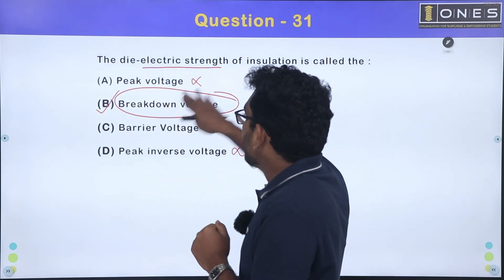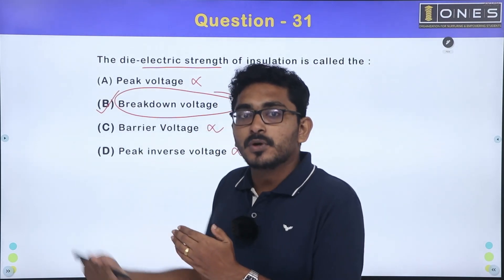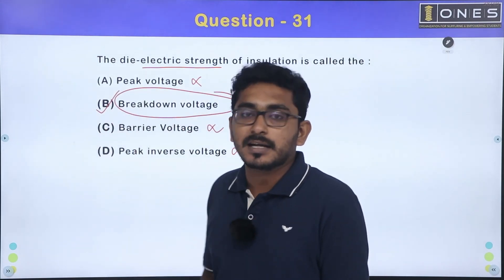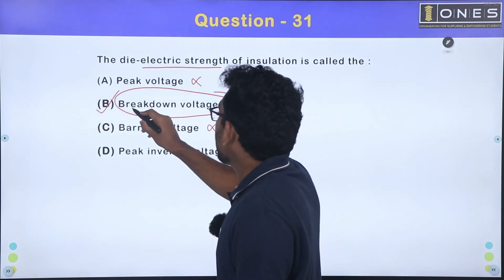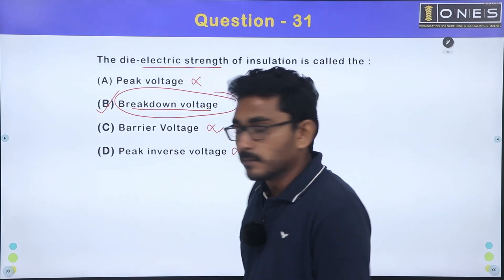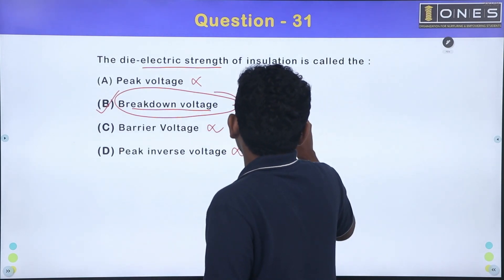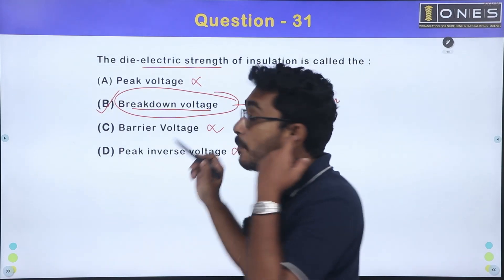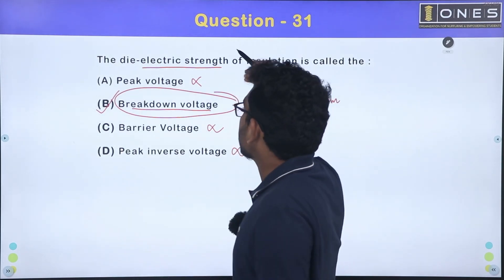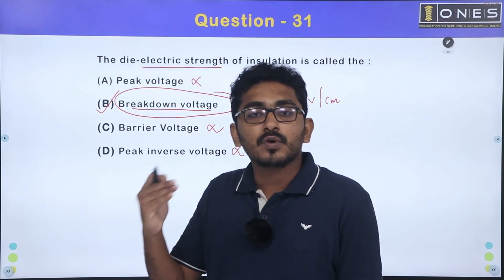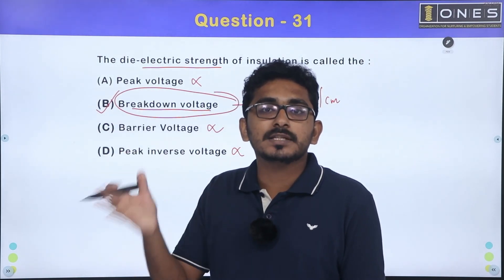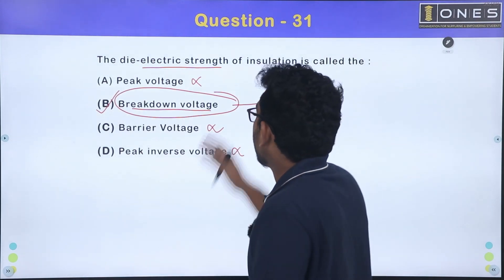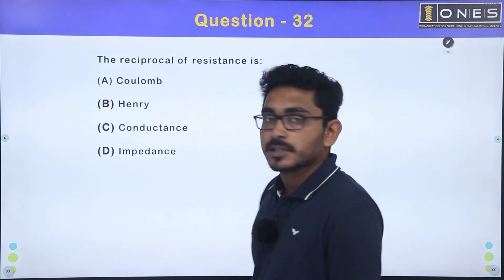The meaning is that if a particular voltage exceeds the insulation property, it becomes loose and starts conducting. Normally, we call it 33 kV per centimeter breakdown voltage, which has dielectric strength. If the voltage is greater, the insulation loses its insulation property. That is the explanation.